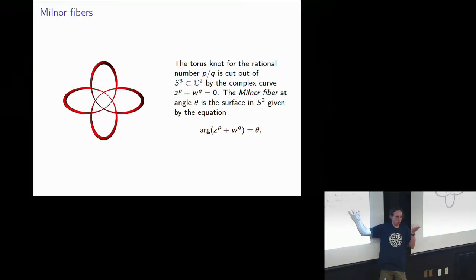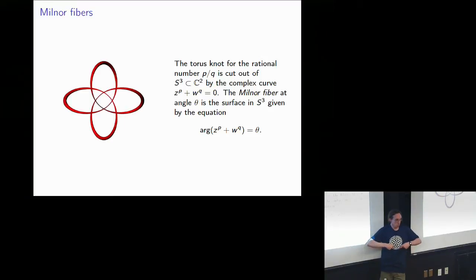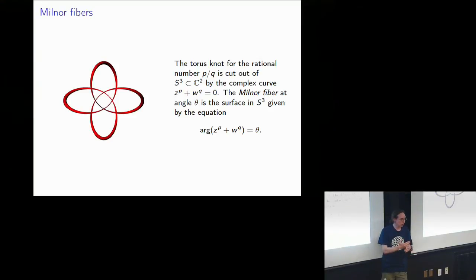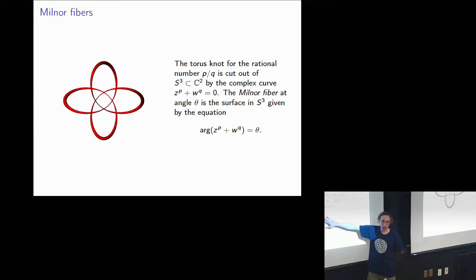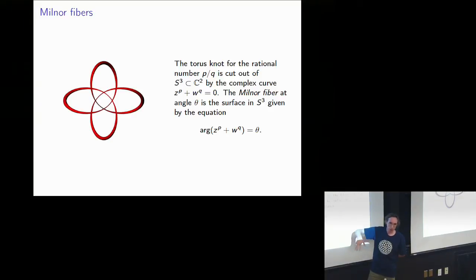We like Milnor fibers because they give us Seifert surfaces for torus knots. The Milnor fiber is clearly the most awesome Seifert surface for torus knots. But it's not enough to have an implicit description — we need a parametrization so we can give it to the printer. So here's an example for the 3,3 torus link. Knots are loops in space, but you can also take a collection of loops. This thing is a surface with three boundary components, because the GCD of 3 and 3 is 3.